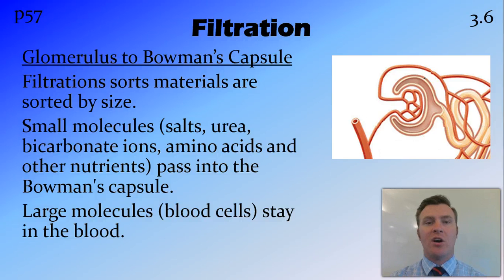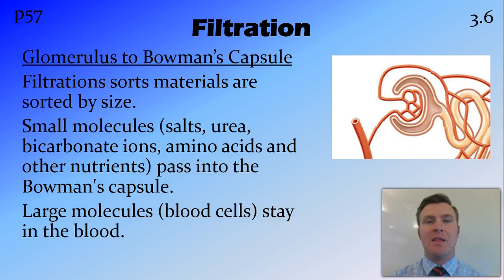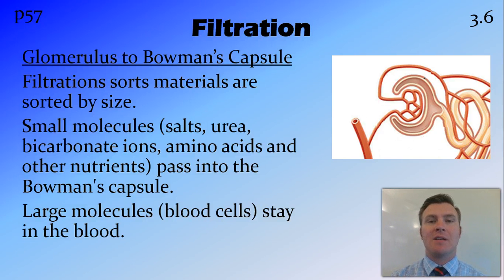The main place that filtration occurs is between the glomerulus and the Bowman's capsule. The glomerulus is a system of blood vessels with holes in the walls that works like a filter sorting things out by size. Big things like blood cells and large proteins stay in the blood supply, while small things like urea, salts, bicarbonate ions, and amino acids pass from the glomerulus through those holes and into the Bowman's capsule.